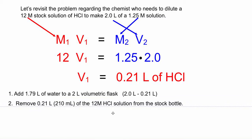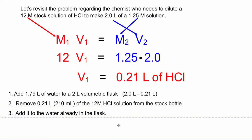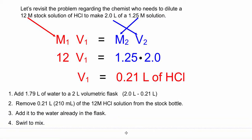Then add your 0.21 liters of hydrochloric acid — take that from the stock bottle and slowly pour it into the water in the flask, then swirl it to dissolve. Make sure your final volume is exactly 2 liters. If it's not, top it off with a little more water.